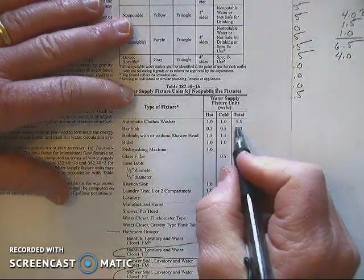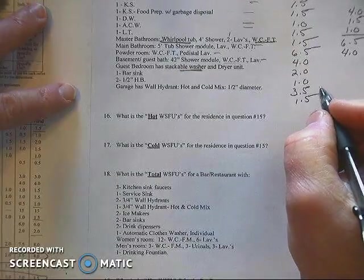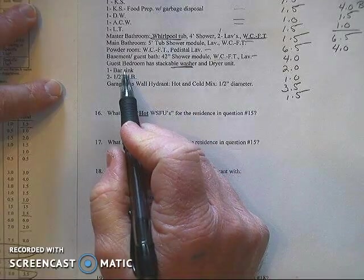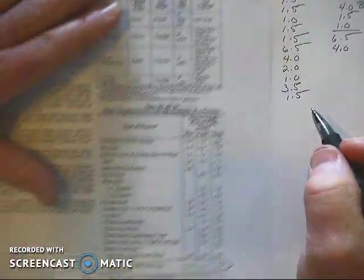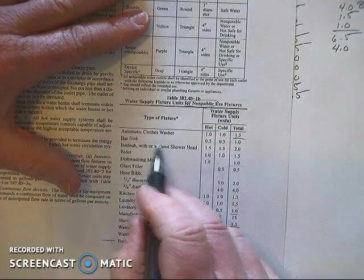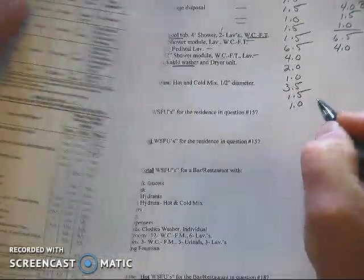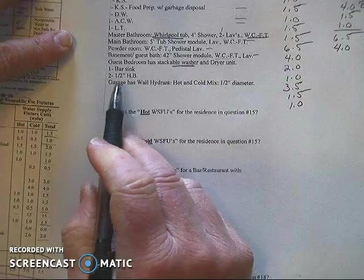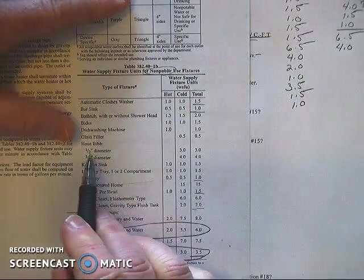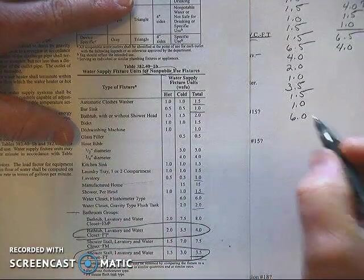And then the last couple of items that are left are a bar sink and a bar sink on the non-public use is going to be 1. So we'll write that down. And then we will grab two half inch hose bibs. One half inch hose bib is three, so two of them are going to be worth six.